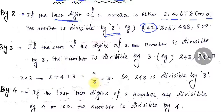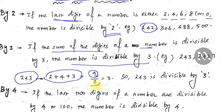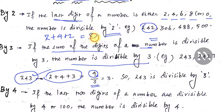For divisibility by 3: if you sum all the digits of the number and that sum is divisible by 3, then the whole number is divisible by 3. For example, 243: 2 + 4 + 3 = 9, and 9 is divisible by 3, so 243 is also divisible by 3. For 242: 2 + 4 + 2 = 8, and 8 cannot be divided by 3, so 242 is not divisible by 3.